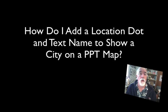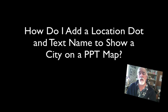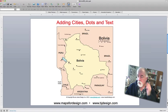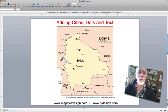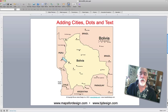Hi, Bruce Jones here, and welcome to Maps for Design and BJDesign.com. We've had a great question come in from one of our customers, and the question had to do with adding cities, dots, and extra text to one of our maps. So let's do that today — a little example — and we'll show you how to do that.